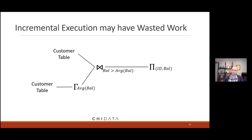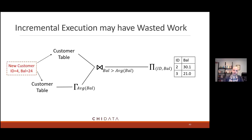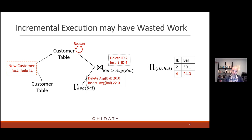Here's a simple motivating example: a query looking for customers who have a balance higher than the average balance — compute the average, then find customers with balance higher than that average. With eager incremental execution, when a new customer record arrives it changes the stability of the average. Because it changes the average, I have to update those join results — records not previously included may need to be added, or customers that were in the join may need to be removed. So some work you had done before becomes useless when the data changes — you have to get rid of it and redo that work. Doing work early can potentially be wasted work.